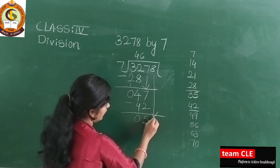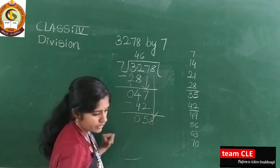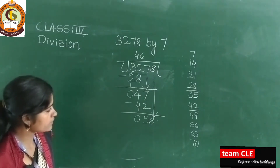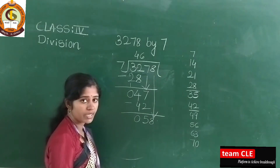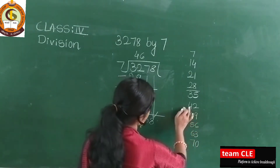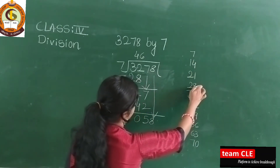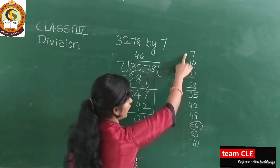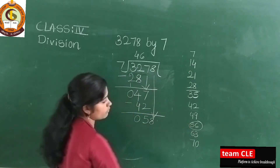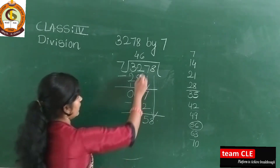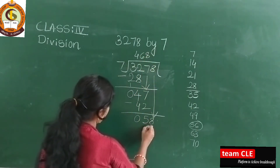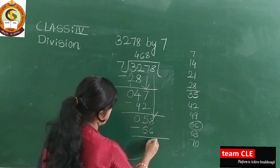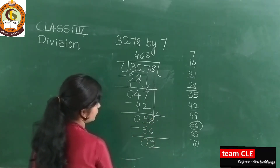Bring down the next digit 8, so it becomes 58. Check the table: 7, 14, 21, 28, 35, 42, 49, 56 — the nearest small number less than 58 is 56. So 7×8=56. Subtract: 8 minus 6 is 2, and 5 minus 5 is 0.